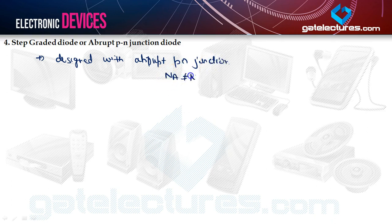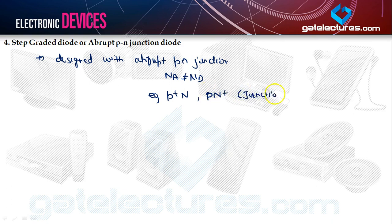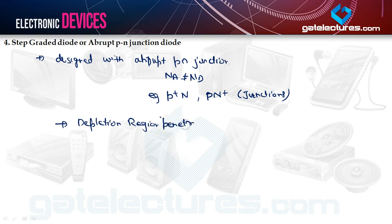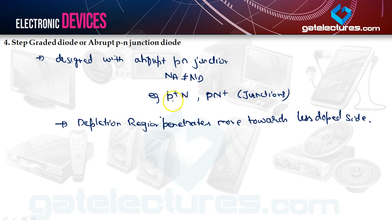This diode is designed with an abrupt PN junction where NA is not equal to ND — either NA is far greater than ND or vice versa. Examples include P+N or PN+ type junctions. This topic is important for both gate and IES. The depletion layer penetrates more towards the less doped side — for a P+N junction, penetration is more towards the N side, and for PN+, more towards the P side.